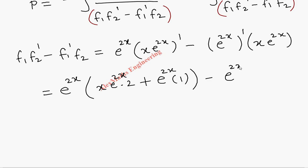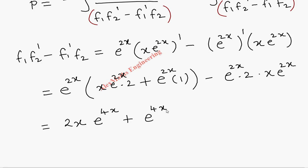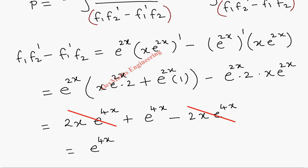Expanding: e^(2x) times (2x e^(2x) plus e^(2x)) minus 2e^(2x) times x e^(2x). Multiplying out gives 2x e^(4x) plus e^(4x) minus 2x e^(4x). The first and last terms cancel, leaving just e^(4x). So f1 f2' minus f1' f2 equals e^(4x).